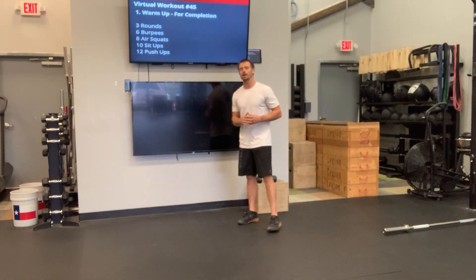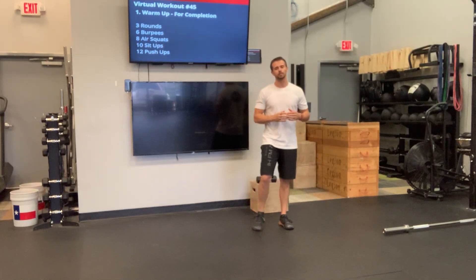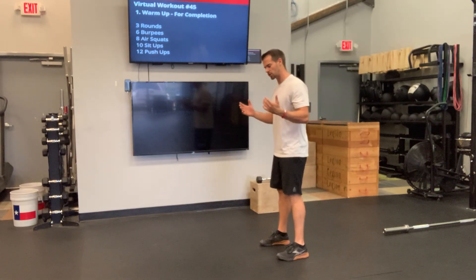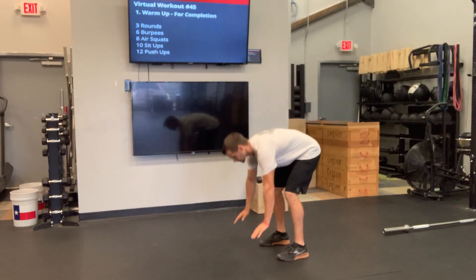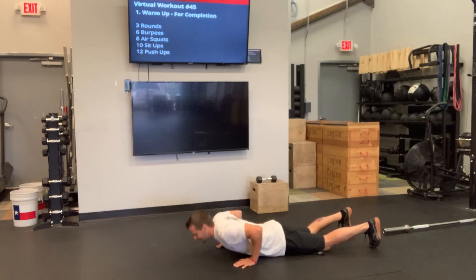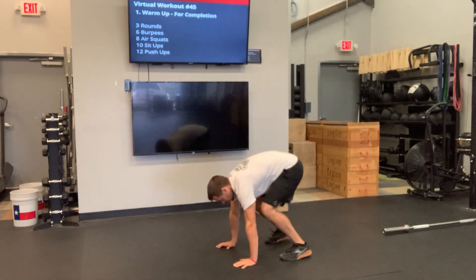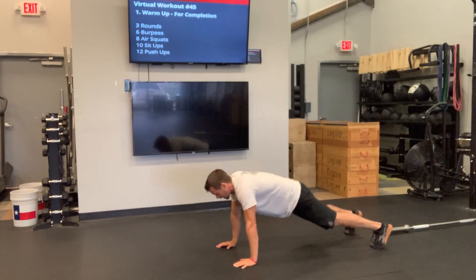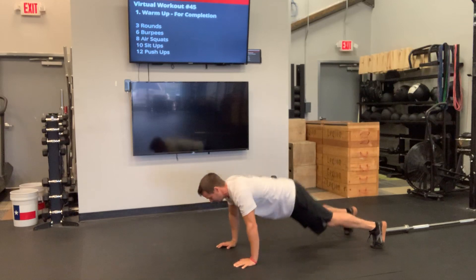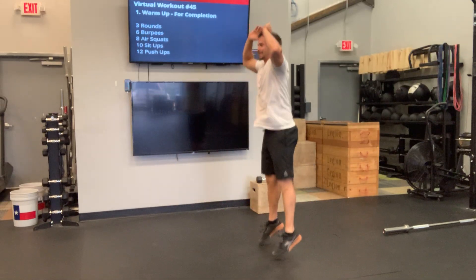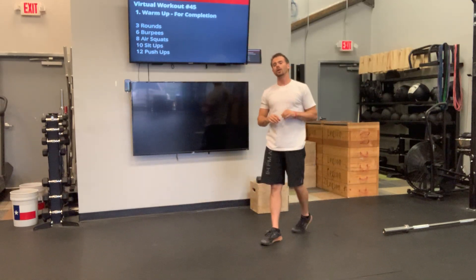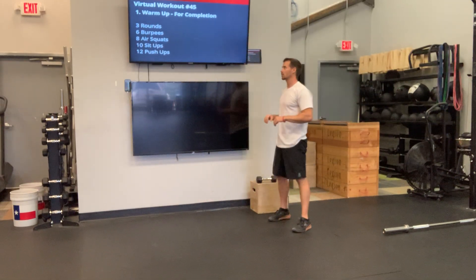We have three rounds, starting with six burpees. On that burpee, we have options. First, you're going to set those hands on the ground. You can jump those feet out, bring that chest and thigh to the ground, and jump those feet up. Or you can step out, bring that chest and thigh to the ground, and step up. I need to see a jump at the top. Go ahead and knock out six of those burpees.